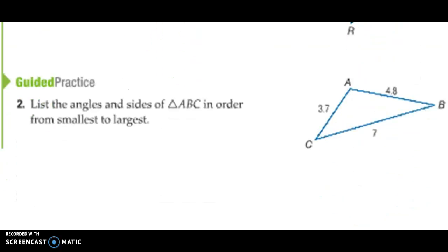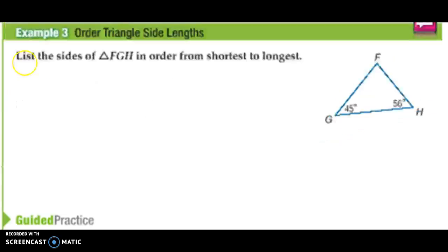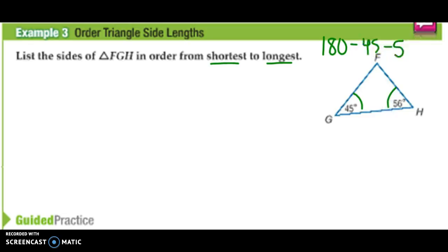Here's a guided practice problem — feel free to stop the video and try it in your notes. Now we can find side lengths based on our angles. In triangle FGH, to order the sides from shortest to longest, we only know two of the angles, but we know all angles in a triangle add up to 180 degrees. So to find angle F, I subtract the known angle measures: 180 minus 45 minus 56, which gives us angle F equals 79 degrees.